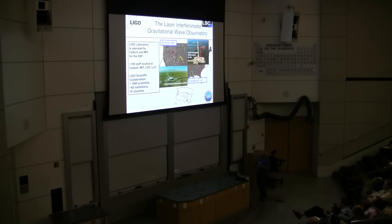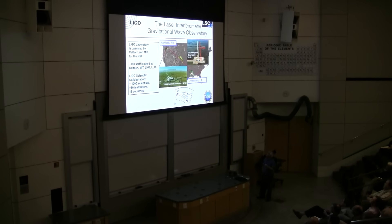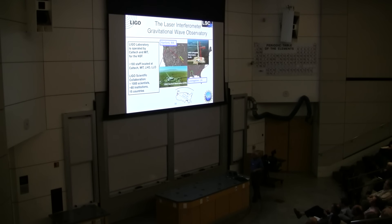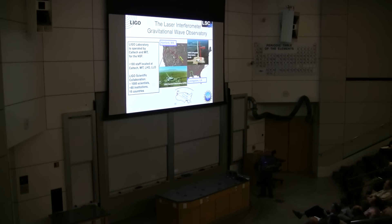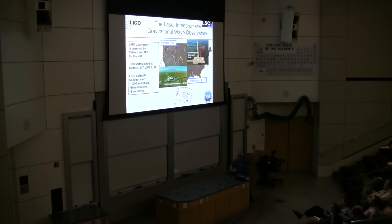The two LIGO detectors — LIGO is the Laser Interferometer Gravitational Wave Observatory — were built by Caltech and MIT for the National Science Foundation. They are 3,000 kilometers apart. One is in southern Louisiana, in the swamps. The other is in the high, dry desert of Hanford, eastern Washington State. The LIGO Laboratory is part of the LIGO Scientific Collaboration, which has grown to over 1,000 scientists from 80 institutions in 50 countries. This is big science. Stanford has been involved since the very beginning and has played major roles in many aspects of developing the LIGO detectors.